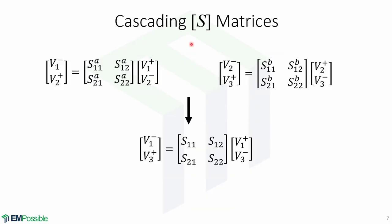Now we will learn how to cascade S matrices. Here we have a scattering matrix A which relates V1 minus and V2 plus and another scattering matrix B which relates V2 minus with V3 plus and we want to combine them to create a single scattering matrix that combines V1 minus with V3 plus.